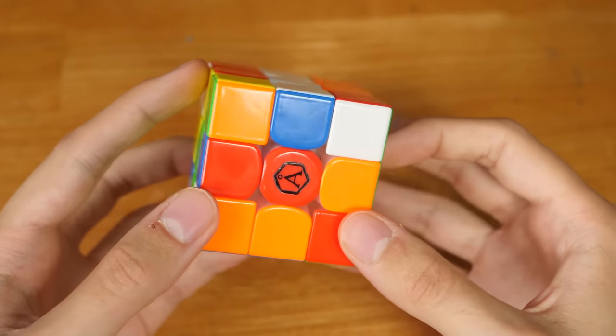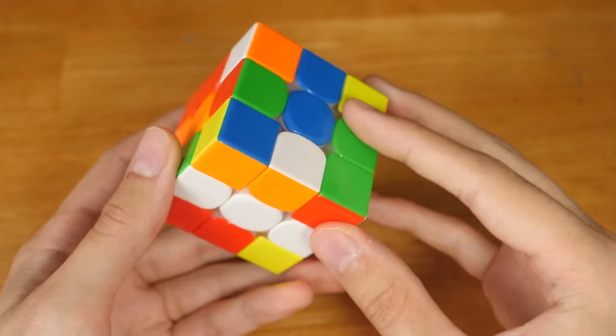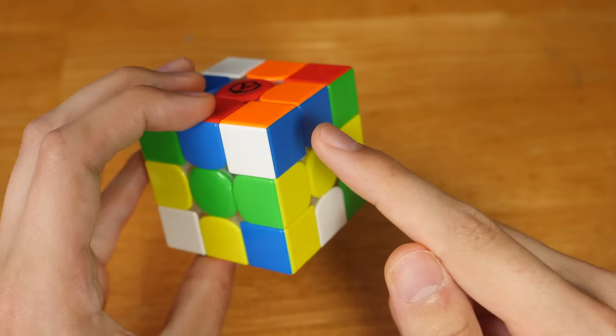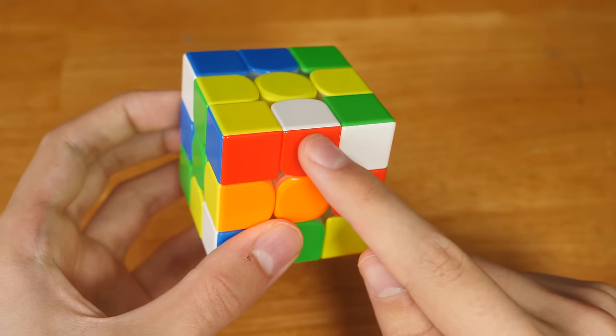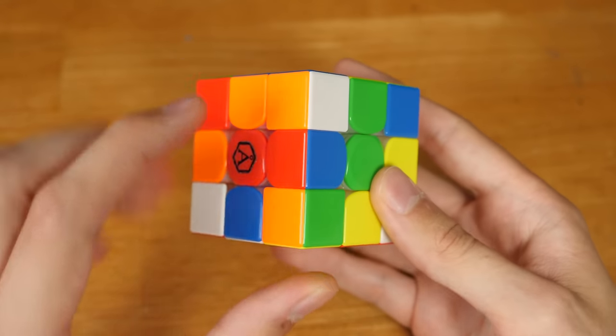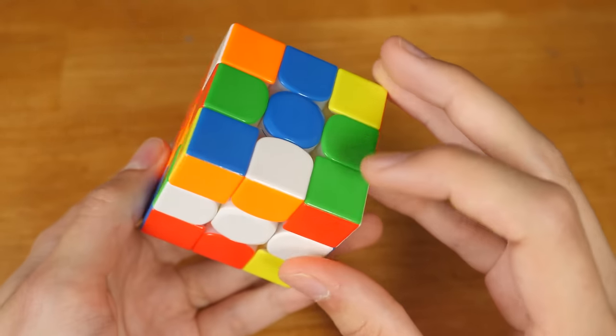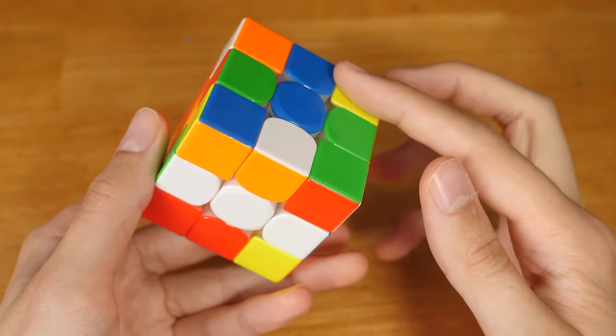This second solve starts with a white X-cross, making use of these two relatively solved cross pieces, this third cross piece and the free pair that goes with it, and the fourth cross piece. You could also plan the second and third pairs by solving this edge and tracking these pieces here to set up the pseudo pair we'll look at later.